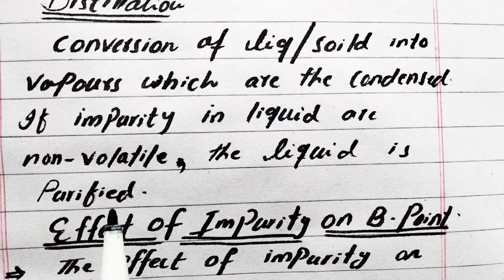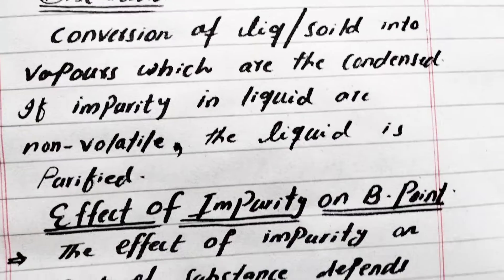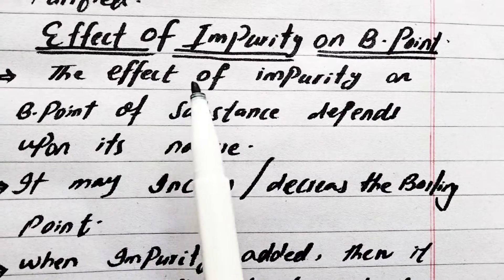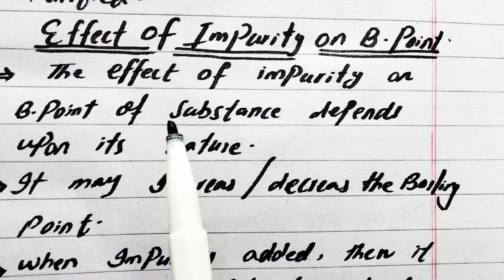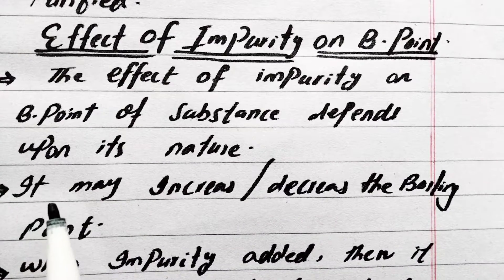What is the effect of impurity on boiling point? Number one: the effect of impurity on the boiling point of substance depends upon its nature. It may increase or decrease the boiling point.